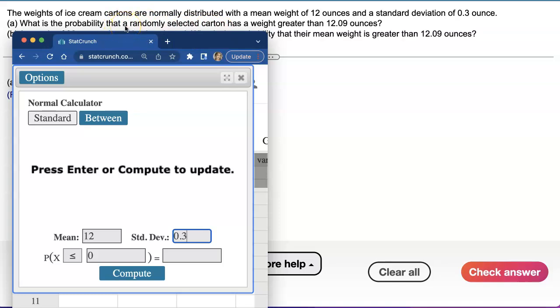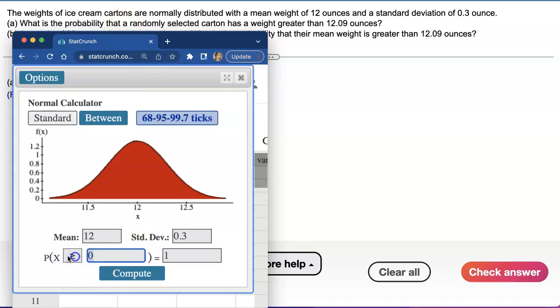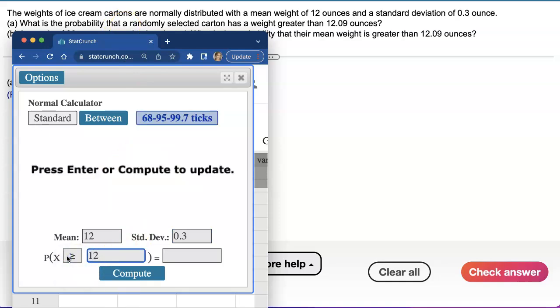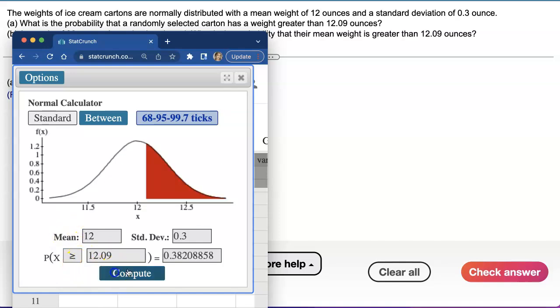If that's the case, we just have to do what we do, but I think your question is more on the second one. If we type that in, we'll be able to find the probability of picking a carton that is heavier than 12.09 ounces, and you got that number right.